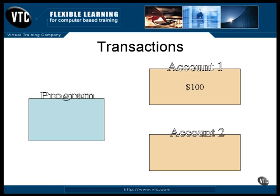This is the classic example of a simple transfer of money from one account to another. It consists of two discrete operations, and no matter how you do them, there is a moment of vulnerability. For example, say you take the money out of account one, and your next step is to put it into account two, but the system crashes instead. The money isn't there anymore — it's just gone.